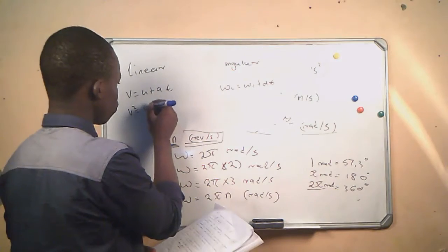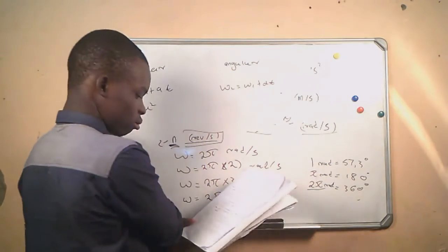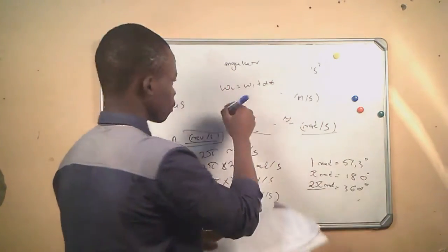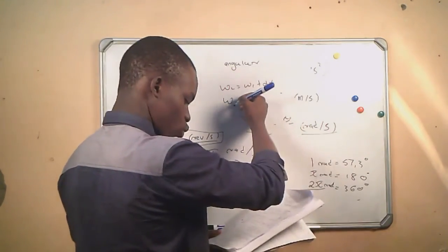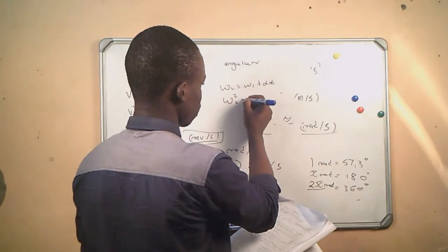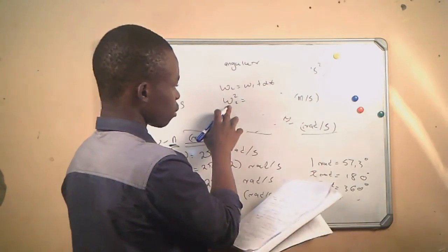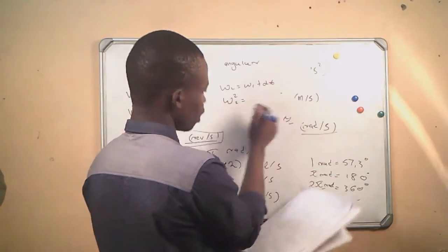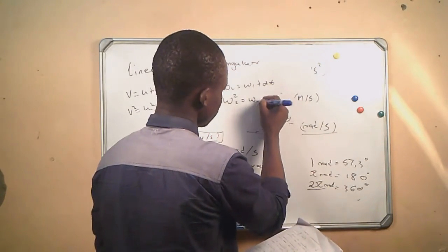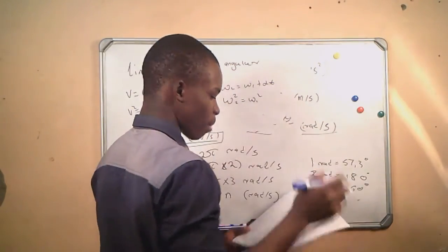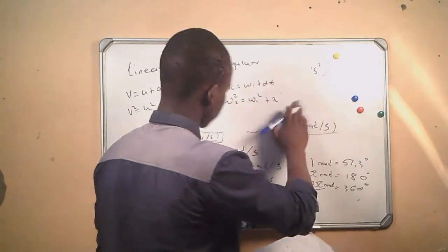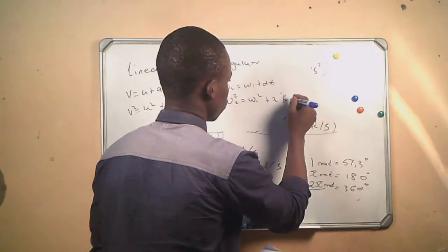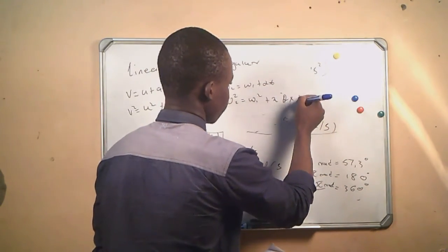The next linear formula is v² = u² + 2as. The angular equivalent is: ω₂² = ω₁² + 2αθ, where ω₂ is the final angular velocity, ω₁ is the initial angular velocity, θ is the angular displacement, and α is the angular acceleration.